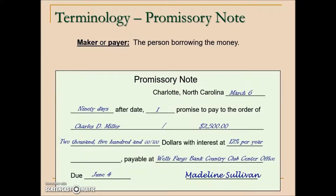Some terms we will define here: the maker or payer. This is the person that's borrowing the money, and this is indicated at the bottom of this promissory note. Madeline Sullivan is the maker or payer — the person borrowing the money.